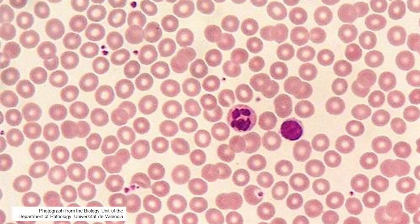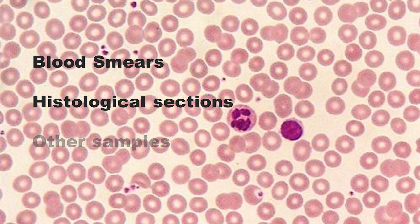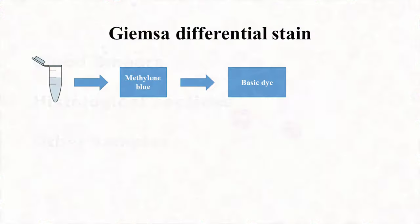Giemsa stain, designed by German chemist and bacteriologist Gustav Giemsa, is a common method to stain blood smears and other biological samples. It is a differential staining that is able to distinguish different cellular structures according to their affinity for basic dyes, acid dyes, or a combination of both.